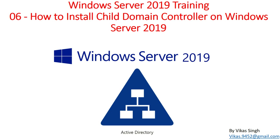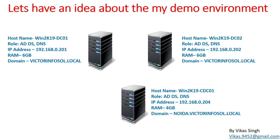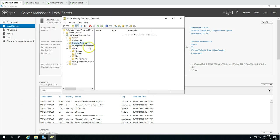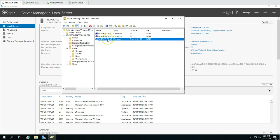Let's get in. This is my domain environment for this video. We have two domain controllers working on VictorInfoSoul.local. The first one is Win2K19 DC01, which has Active Directory and DNS roles, with IP address 192.168.0.201. The second one is DC02, also having Active Directory role. In Active Directory Users and Computers, you can see I have two writable domain controllers and one read-only domain controller created in the last video.